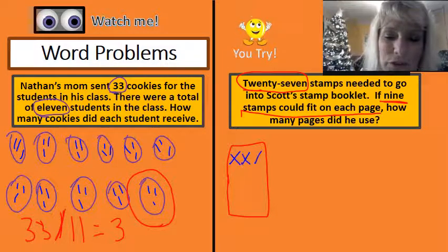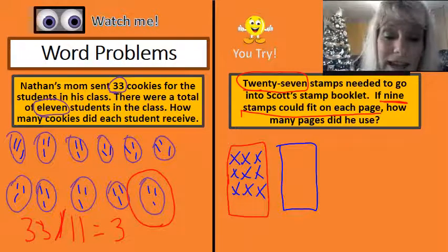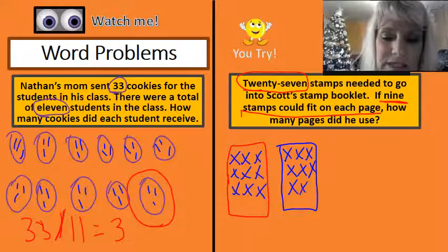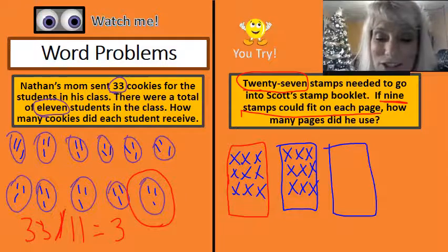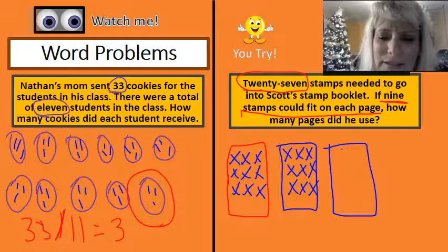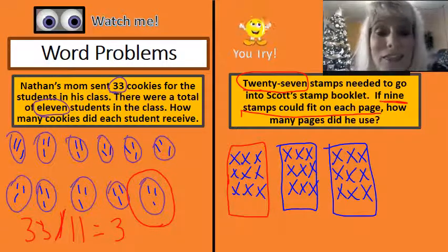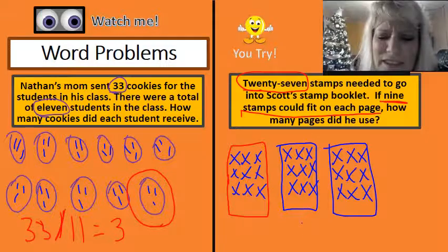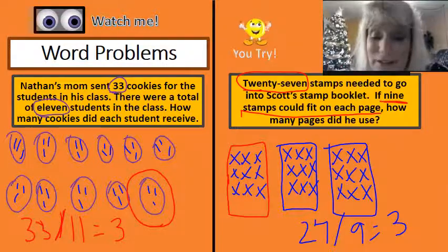So here is 1, 2, 3, 4, 5, 6, 7, 8, 9 — I have not run out of stamps, so I'm going to go ahead and get another page. And I need to put 9 here too: 10, 11, 12, 13, 14, 15, 16, 17, 18. I still have not run out of stamps, so I'm going to go ahead and fill in another page: 19, 20, 21, 22, 23, 24, 25, 26, 27. Guess what? I ran out of stamps, and I can see it took me three pages to run out of stamps. This tells me that 27 divided by 9 is going to equal 3 because 3 times 9 is 27.